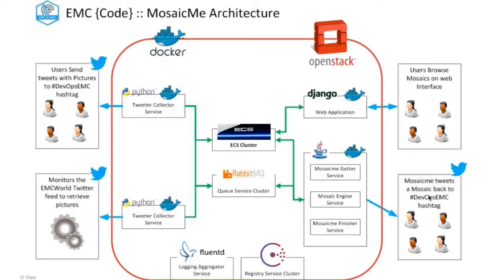Here's the big architecture picture. The MosaicMe demo is running all software only — that's the first thing. All these are different services and everything is open source. You can download these services from the internet and run them in any cloud. Everything here is running as a container — container-based services running in a cloud along with ECS. ECS is running as a completely container-only service, using the OpenStack cloud — in this case, running in Rackspace — and using the Swift APIs for the backend storage.